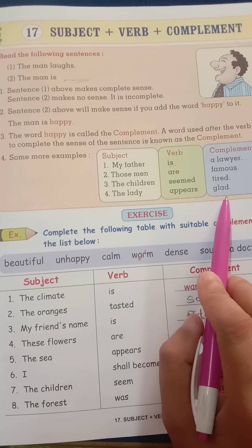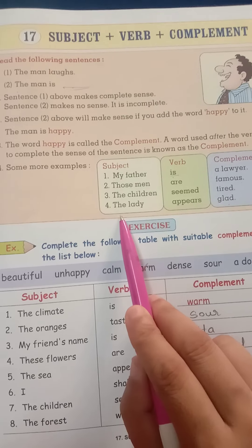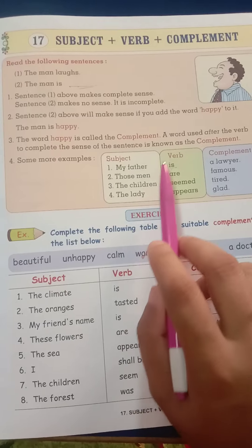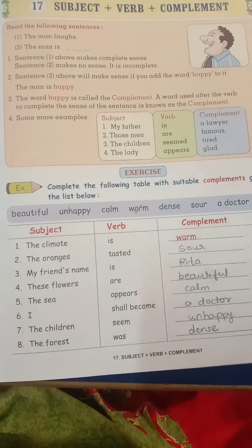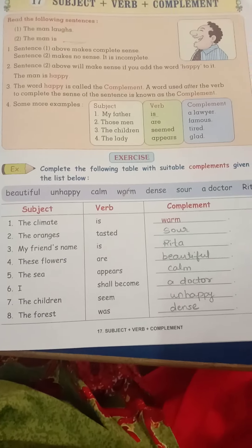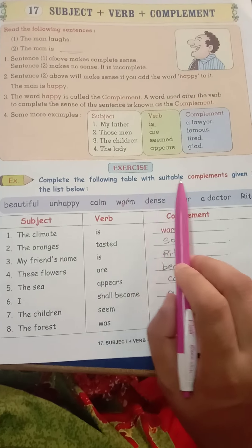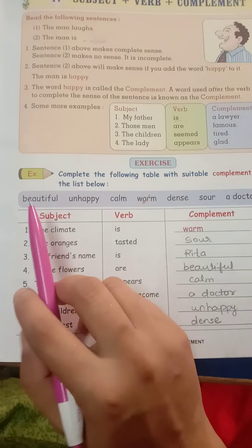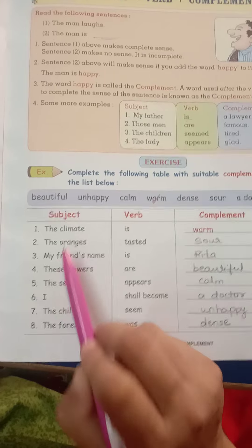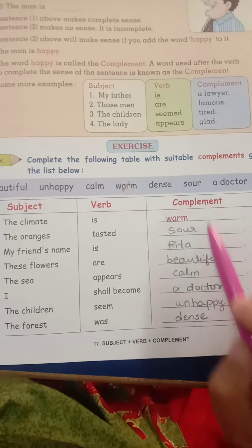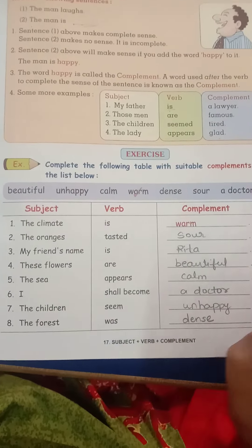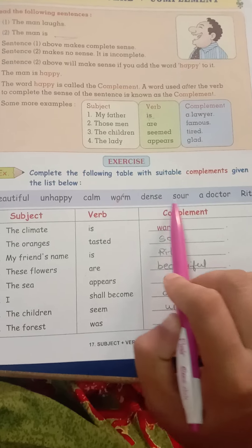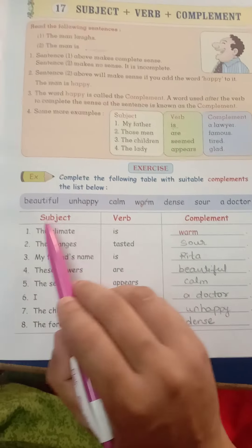Now let's go to the exercise. Complete the following table with suitable complements given in the list below. The subject and verb are already given — what you have to do is write the complement from the given list. The options are: beautiful, unhappy, calm, warm, dense, sour, doctor, Rita.